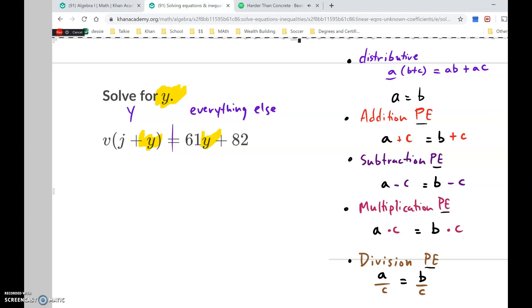The first step is we're going to simplify this expression using distribution. So we're going to give this v to the j and to the y through multiplication, which just looks like vj plus vy. And we didn't do anything to the right expression, so we can just leave that the same, plus 82.